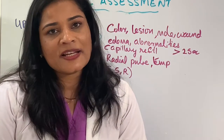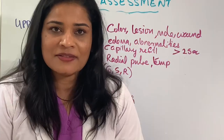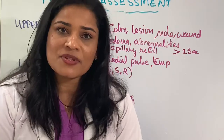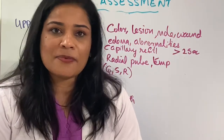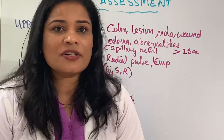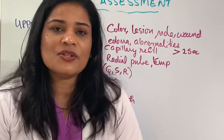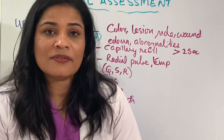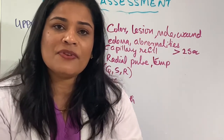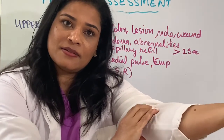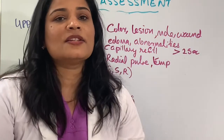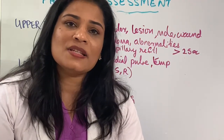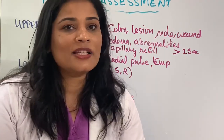For upper and lower extremity assessment, the first thing is to inspect: check the color of the skin, any lumps, lesions, wounds, cuts, scars, abnormal structures, or abnormalities. Then feel the pulse. For the upper extremity, feel the radial pulse and the brachial pulse. For the lower extremity, check the femoral pulse, popliteal pulse, posterior tibial, and dorsalis pedis.